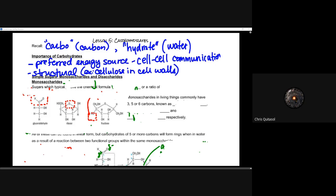Carbohydrates are very structurally sound — they can be used to make up many different structures. Cellulose and cell walls, cell membranes, utilize components of carbohydrates to create support structures and systems, as well as cell-to-cell communication. As we learn more about hormones and cell-to-cell communication throughout this course, you'll start to see why carbohydrates are so important.